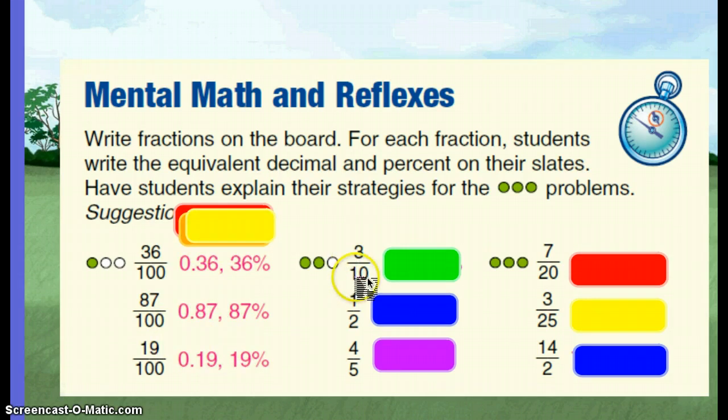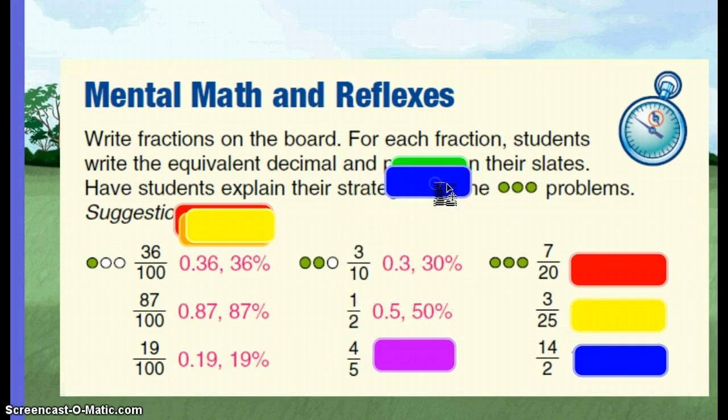Three tenths. Remember we're in the tenth spot now, so 0.3 or 30 percent. One half. 0.5 or 50 percent.